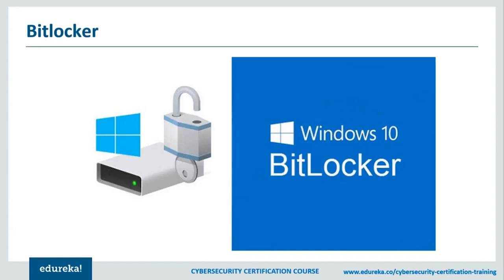They'll have a chip in them called the Trusted Platform Module, or TPM. The TPM chip stores the keys that allow the operating system to be able to access the disk through the encryption and decryption process. They use a pretty strong encryption cipher which is AES, but you have to have one of the couple of different versions of Windows in order to use BitLocker. It's something you would normally run in an enterprise, which is why it's included in the enterprise version.